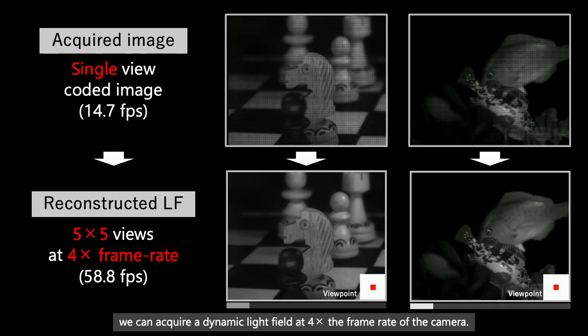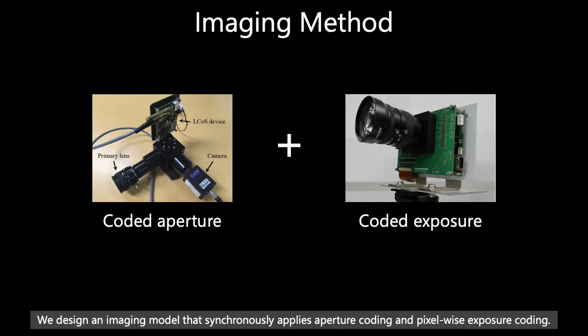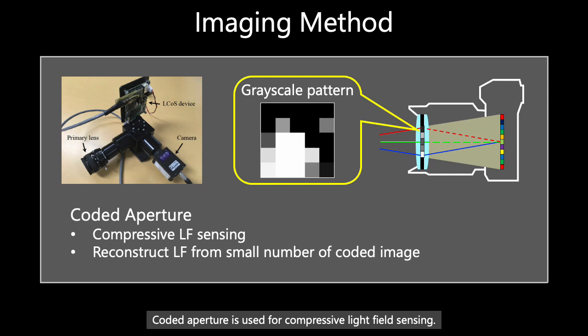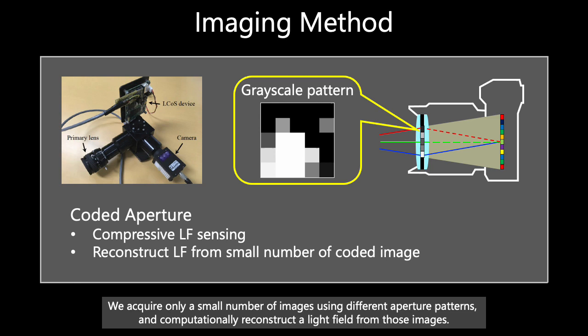We design an imaging model that synchronously applies aperture coding and pixel-wise exposure coding. Coded aperture is used for compressive light field sensing. As shown in the figure, we control the transmittance pattern with the aperture plane. We acquire only a small number of images using different aperture patterns and computationally reconstruct a light field from those images.